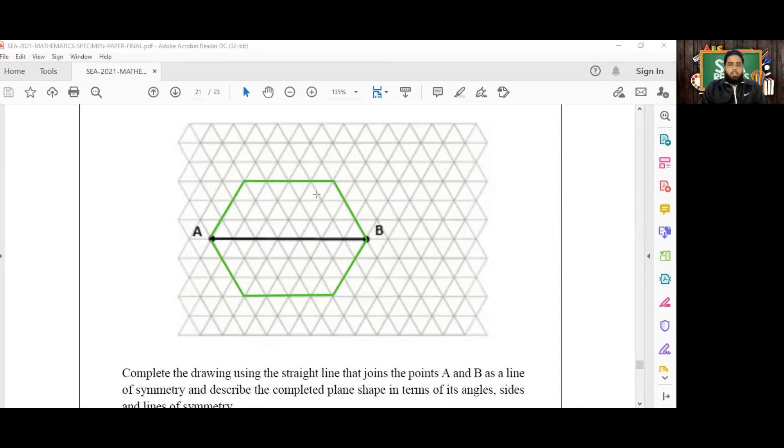In terms of the angles, there are now one, two, three, four, five, six angles, six sides, and there are two lines of symmetry.